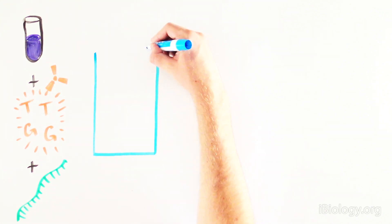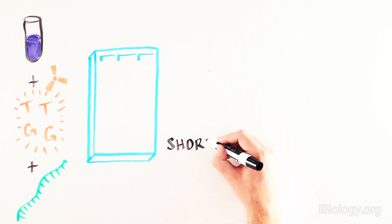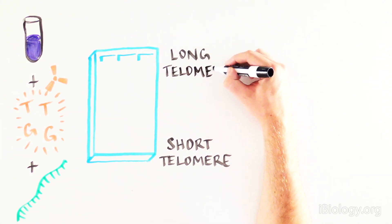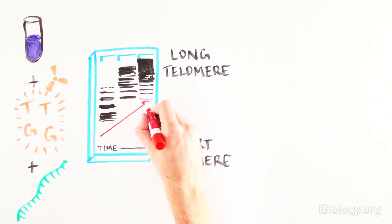Then the scientists looked at the ability of the tetrahymena extract to extend the telomere template. And what do you get? The nuclear extract of tetrahymena, when mixed with radioactively labeled T or G nucleotides, is sufficient to produce a telomere.